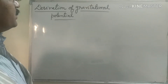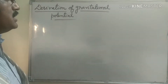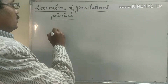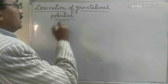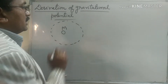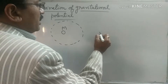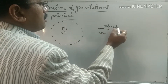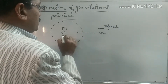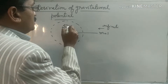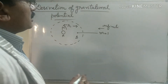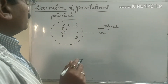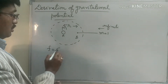Now we derive the formula of gravitational potential. We know that gravitational potential is the work done to carry a unit mass from infinite to inside the gravitational field. Suppose this is a body of capital M mass, and this region represents the gravitational field of that body, and a unit mass is carried from infinite to that point. Suppose this point is A, this point is B, and this separation is small r. The work done to carry this unit mass from infinite to that point is known as gravitational potential.